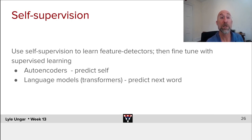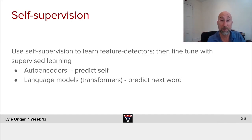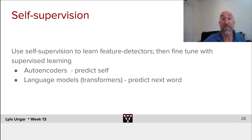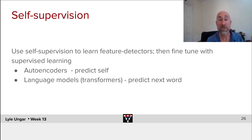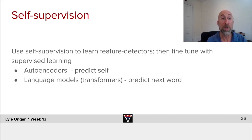We've seen self-supervision as being critical. Auto-encoders take an image, put it into some hidden state, reconstruct it, maybe by putting in noise. We saw a variety of auto-encoders. We saw language models: given a sequence of words, predict the next word; given a set of words, mask them, predict the masked words. All of these allow us to have lots of data with no labels, where we still learn useful things from the data, which we can then generalize and apply to small labeled sets.